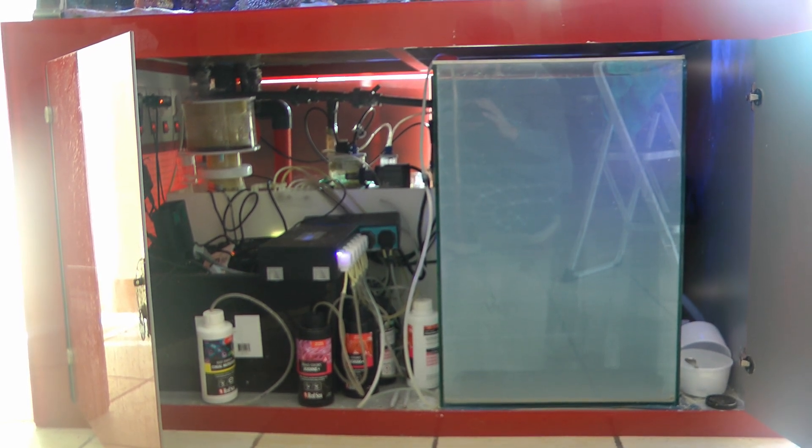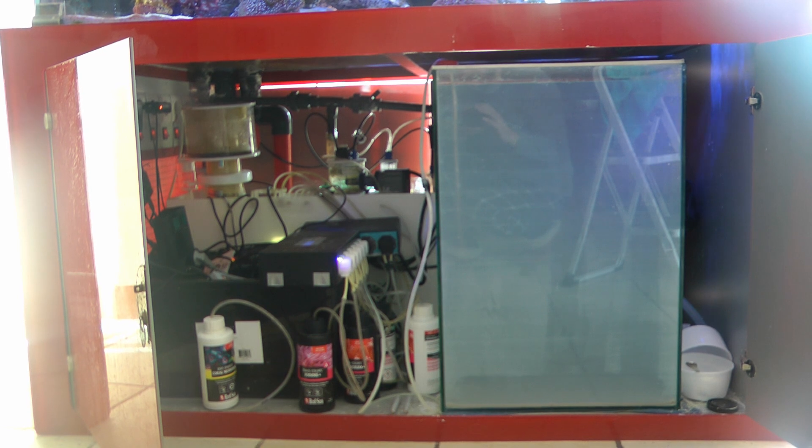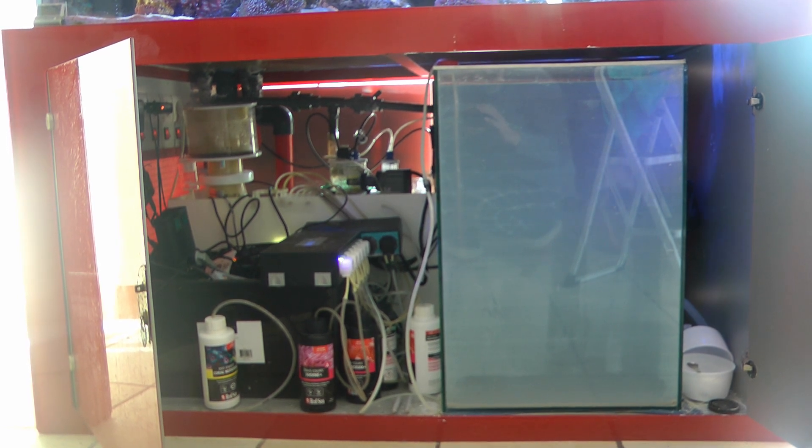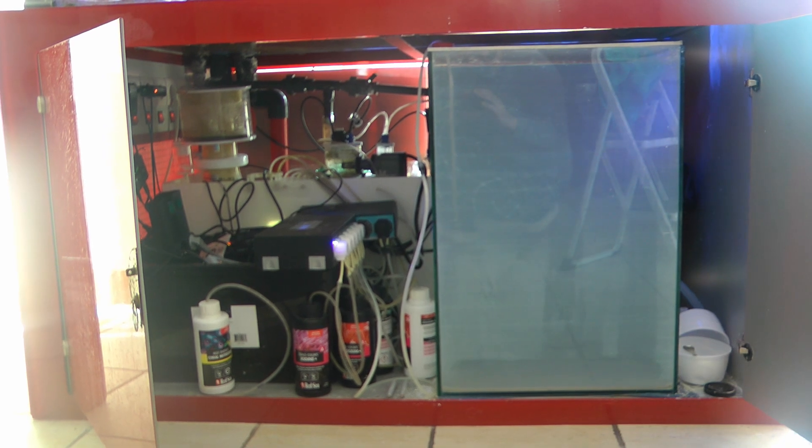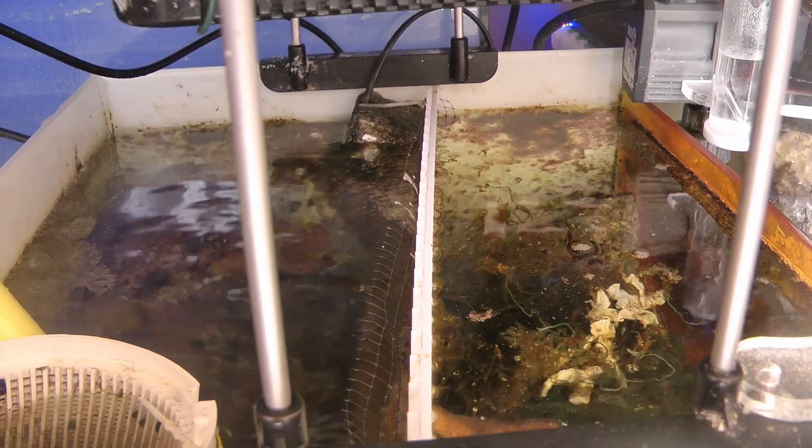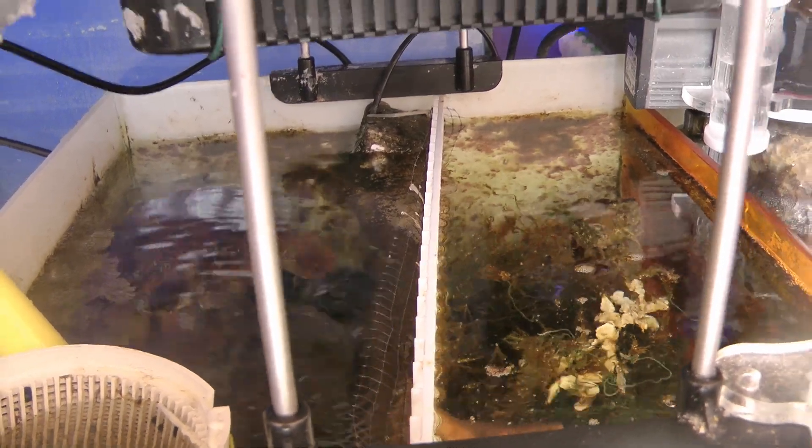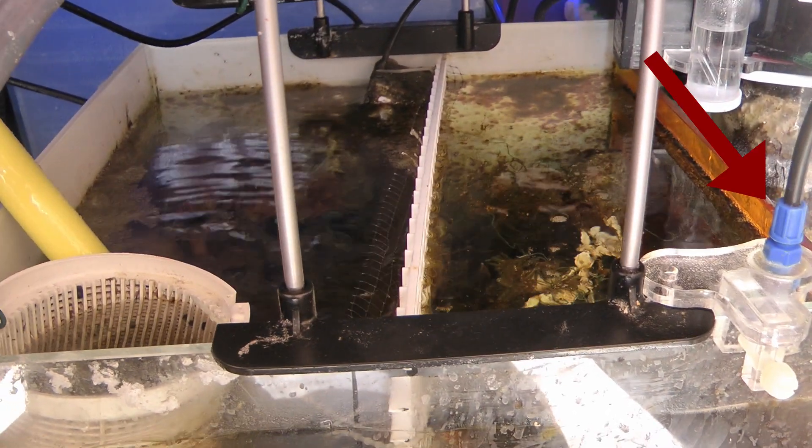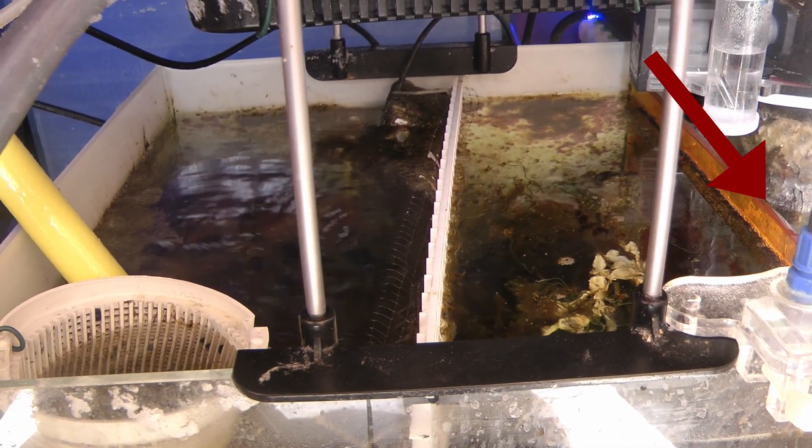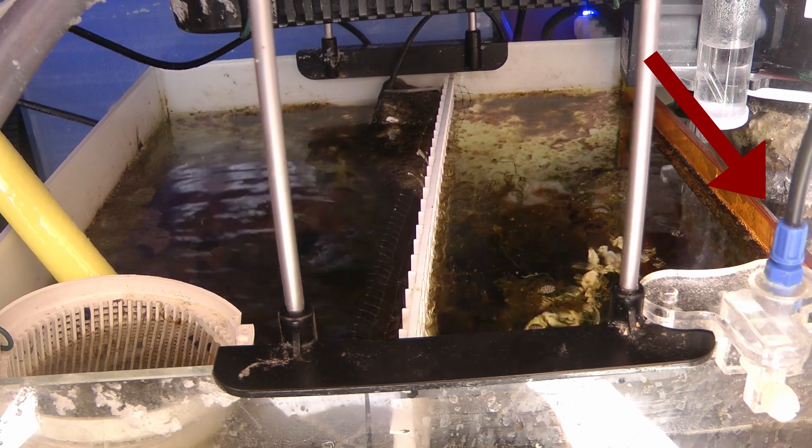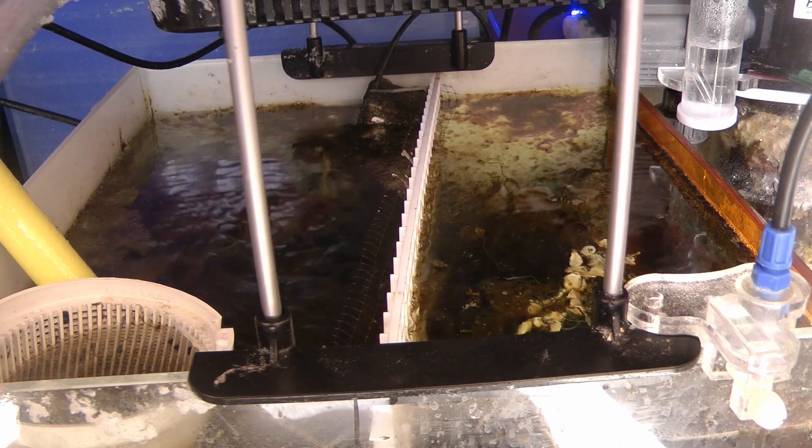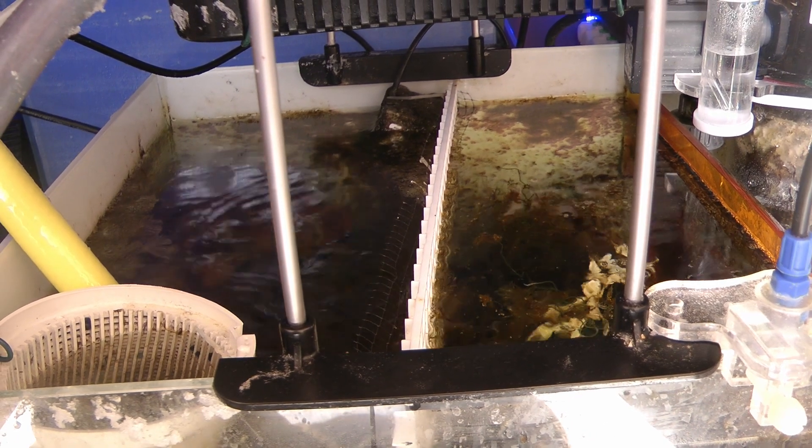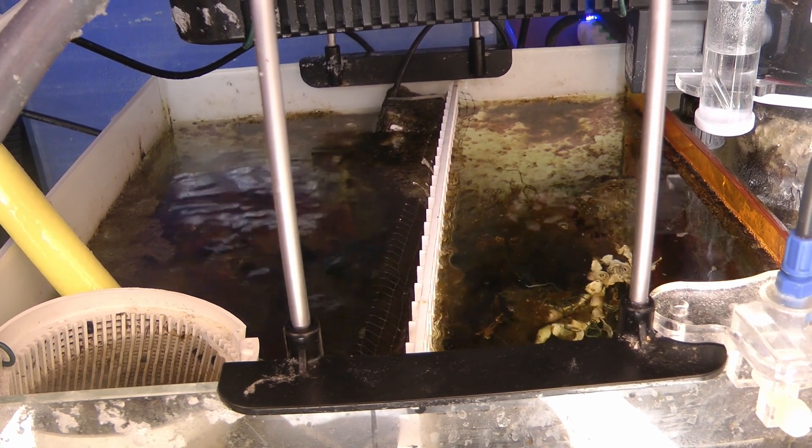The RO tank has 135 liters, and it's enough for almost a month, so I fill the tank and mix kalkwasser once every 4 weeks. The refugium runs in an opposite schedule to the tank, and the calcium reactor effluent flows into the refugium to help with the macroalgae growth and reduce the CO2 getting back into the tank. I think the large waterfall from the refugium to the return pump compartment helps too.